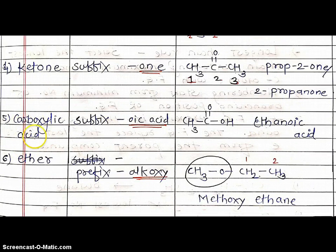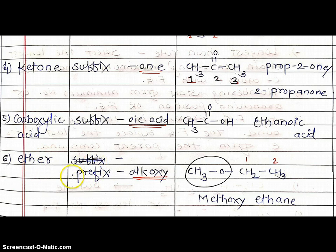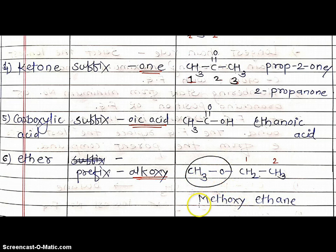Next example: carboxylic acid functional group — add suffix -oic acid. Example: CH3C=OOH — 2 carbons, called ethanoic acid. Next, ether: add prefix alkoxy group. Example: CH3OCH2CH3 — two different alkyl groups on oxygen; the smaller alkyl group gets the prefix and the larger gets the suffix. One carbon = methyl, combined with oxygen = methoxy; two carbons = ethane. The name of this compound is methoxyethane.